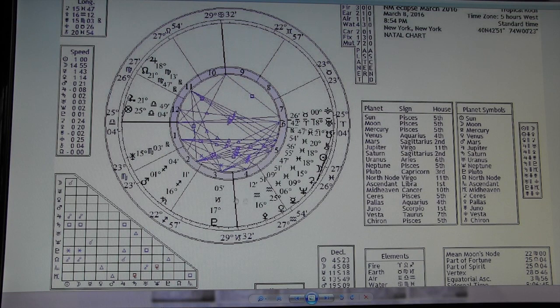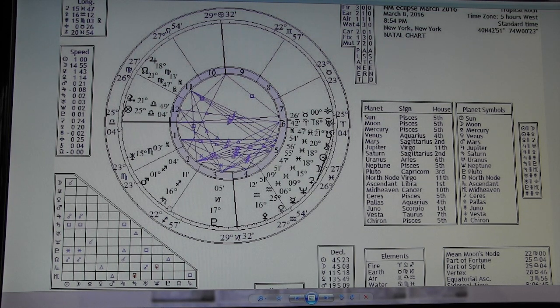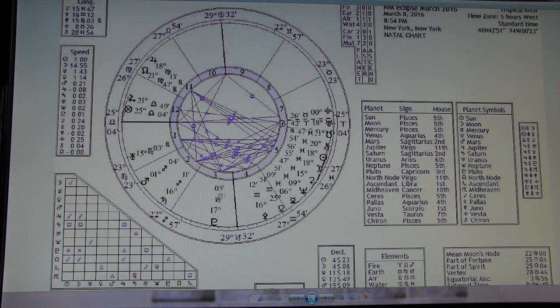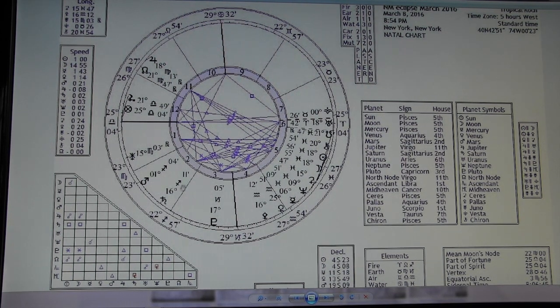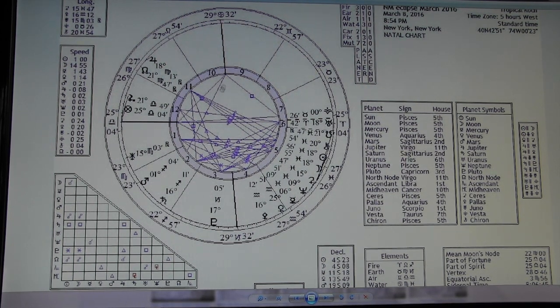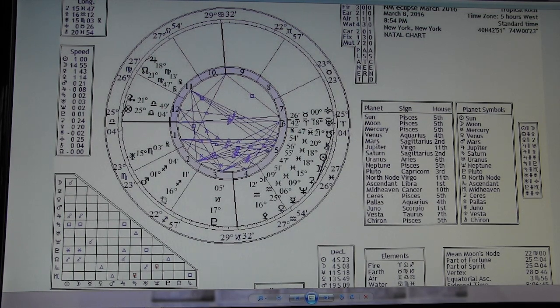Some other things that I want to get into, because there's some other big aspects to this. There's the opposition, but we've got Saturn in the square of it. So you've got a T-square with Saturn in Sag. Sagittarius is also the ninth house, which is religion, education, all that stuff.